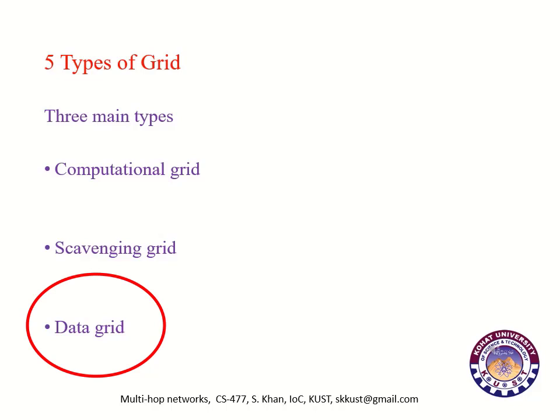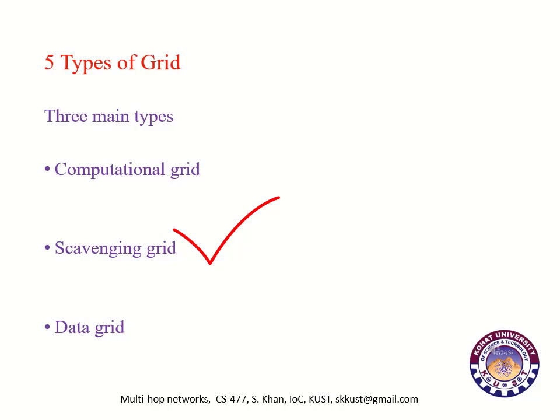Data grid: A data grid is responsible for housing and providing access to data across multiple organizations. Users are not concerned with where this data is located, as long as they have access to it. In simple words, computational grid is used to allocate CPU power to solve particular problems; scavenging grid finds those machines or desktop systems which are idle to solve particular problems; and data grid provides a unified interface for all data repositories of the grid.